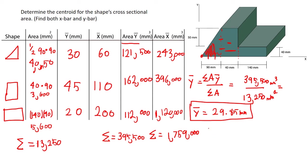So we want to do the same for the x. So x-bar equals sum of the areas times the y-bar over sum of the areas. Making it 1,759,000 millimeters cubed all over 13,250 millimeters squared. Now simply plug that in and we get x-bar equals 132.8 millimeters. Boom.